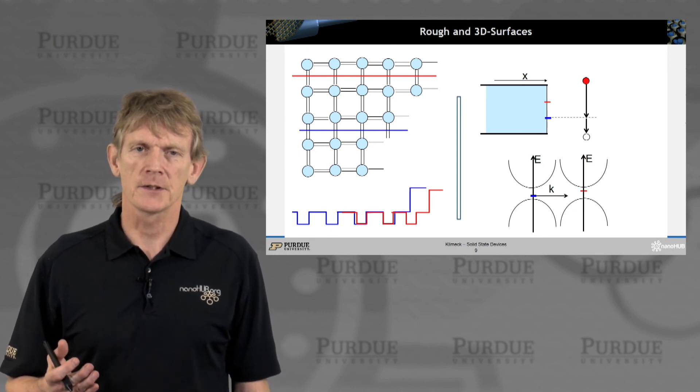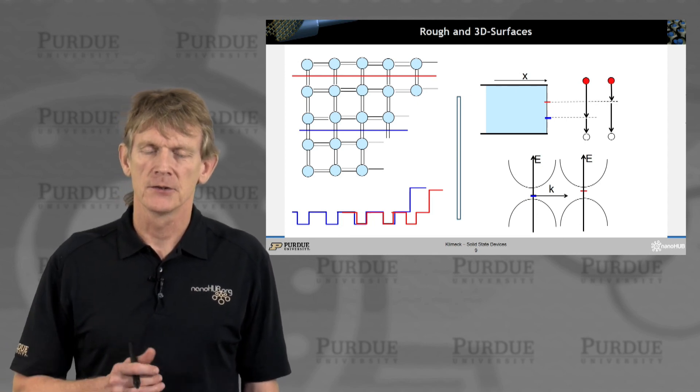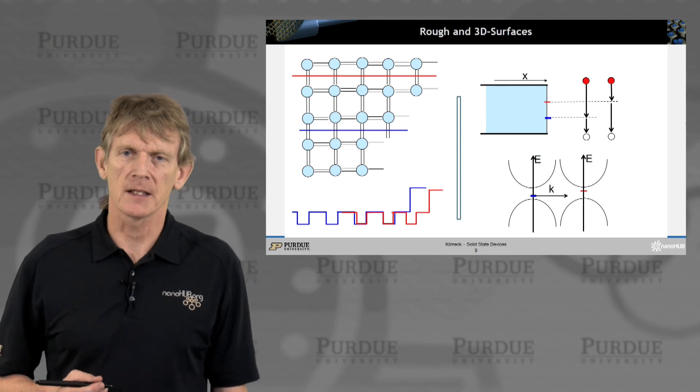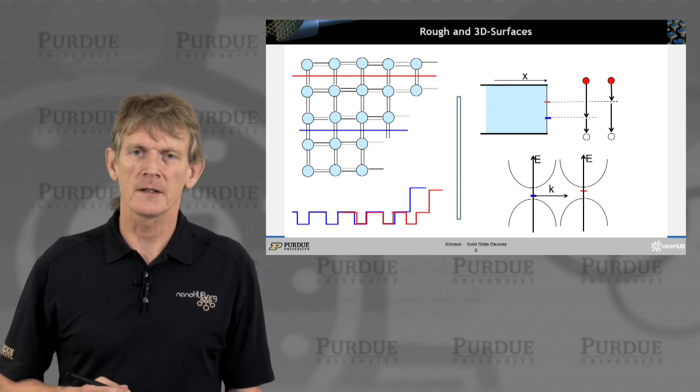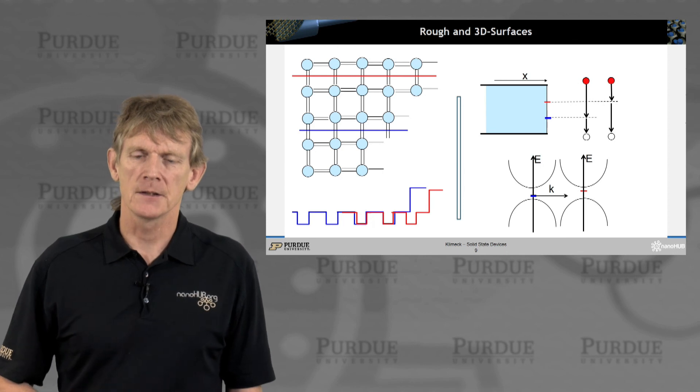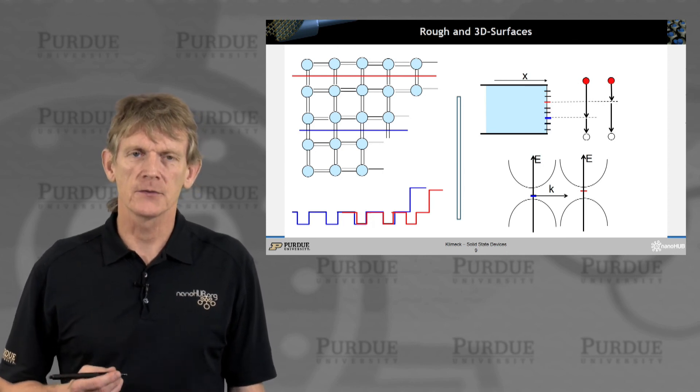The details of which are determined by the details of these interfaces. You might have another trap state like this, where an electron can hop down and all the way down. But the point is, of this plot here, that you have lots of these kind of surface states.